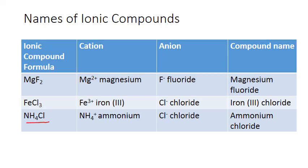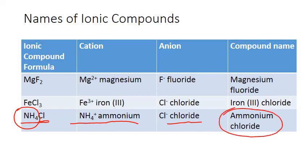This next formula is a little more complicated — I have three element symbols, and those symbols all represent non-metals. So how do I know this is an ionic compound? This is where you have to know those polyatomics. When I see NH4, that particular grouping always represents the polyatomic cation ammonium. Whatever follows it in the formula has to be my anion — in this case, chlorine. My cation is ammonium, and my anion is chloride, so my final compound name is ammonium chloride.